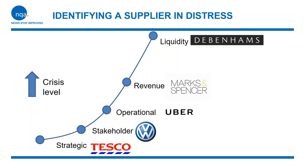And finally, you've got the liquidity crisis, which is obviously the most significant, where you've got financial problems spiraling and urgent measures are required to preserve cash. Debenhams, a large group of department stores in the UK, is currently in the process of being split up and sold off — another victim of the economic downturn, a confused sales strategy, the failure to establish a clear brand proposition, and failing to compete with younger, more affordable and digitally savvy brands.